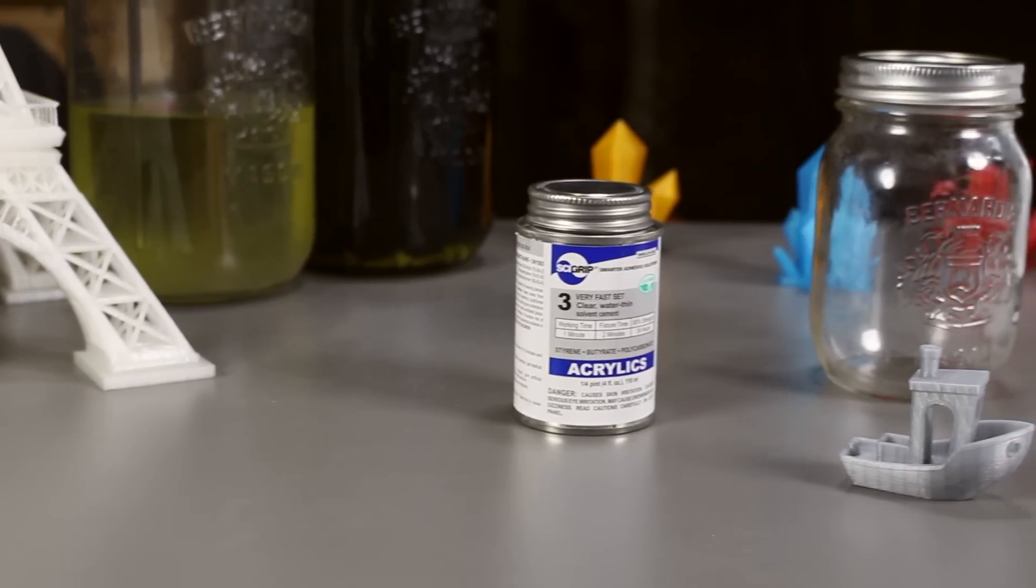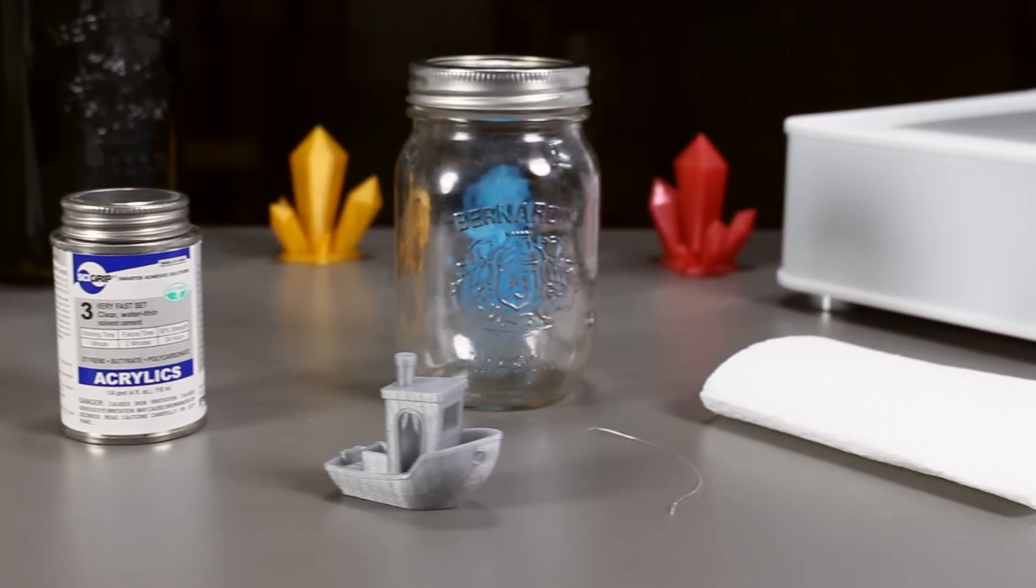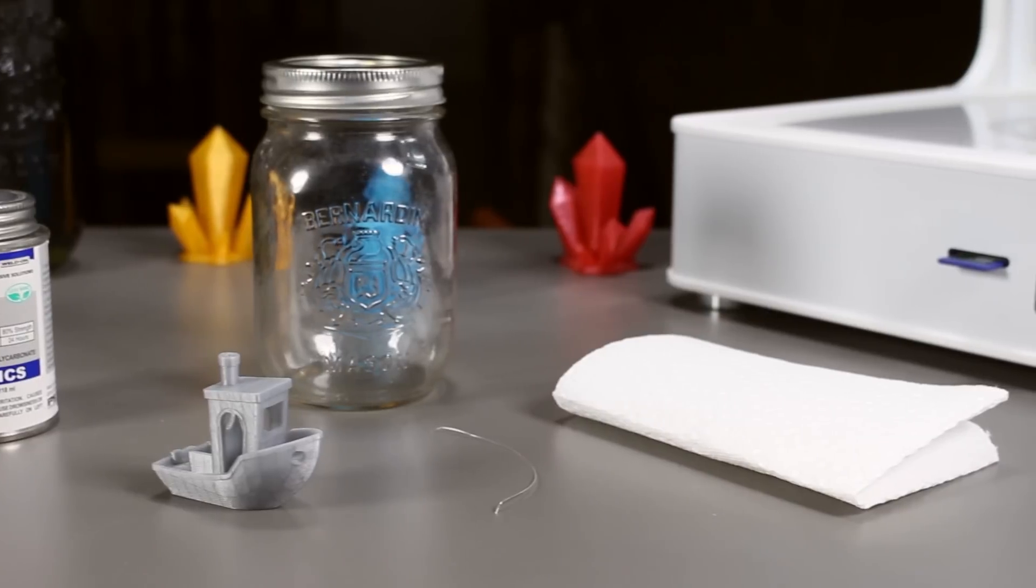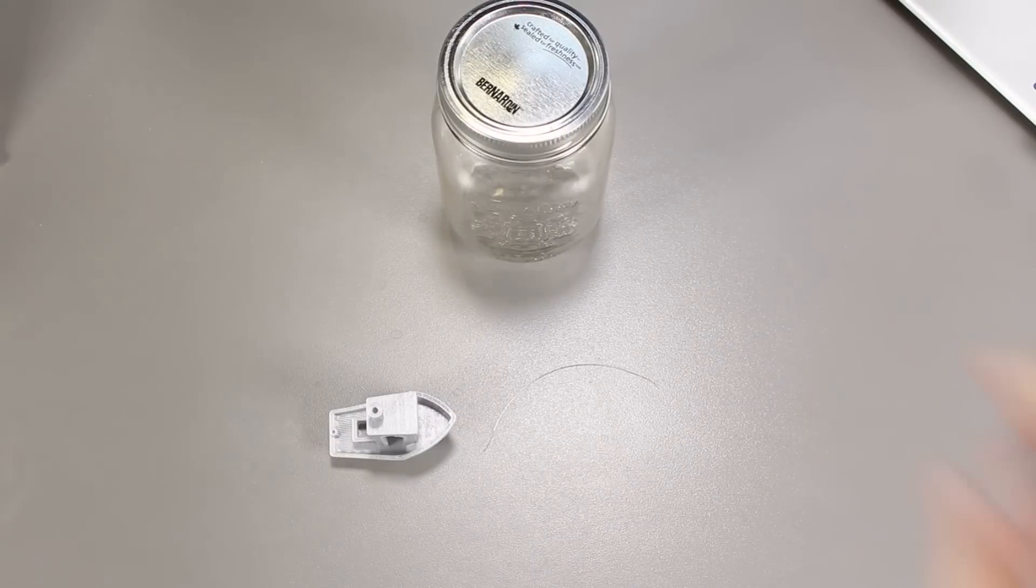We tried vapor smoothing with acetone but it just didn't do anything to PLA at all. Methylene chloride is highly toxic so try not to inhale or ingest it. Make sure you are in a well ventilated area.